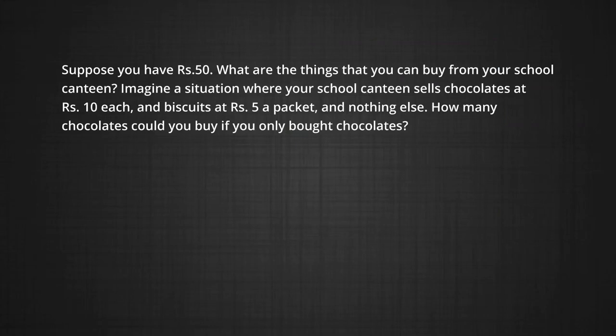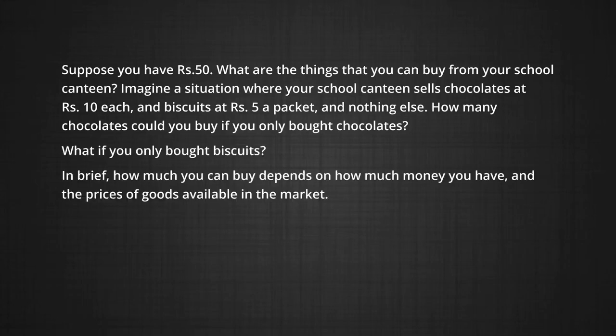Suppose you have rupees 50. What are the things that you can buy from your school canteen? Imagine a situation where your school canteen sells chocolates at rupees 10 each and biscuits at rupees 5 a packet and nothing else. How many chocolates could you buy if you only bought chocolates? You could buy at most five chocolates. What if you bought only biscuits? You would at most buy 10 packets of biscuits. In brief, how much you can buy depends on how much money you have and the prices of goods available in the market.